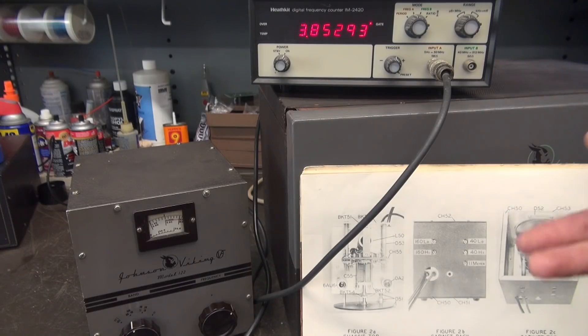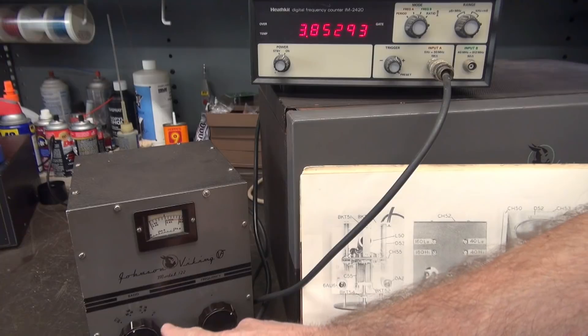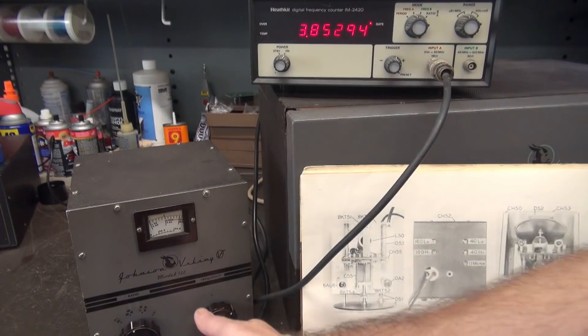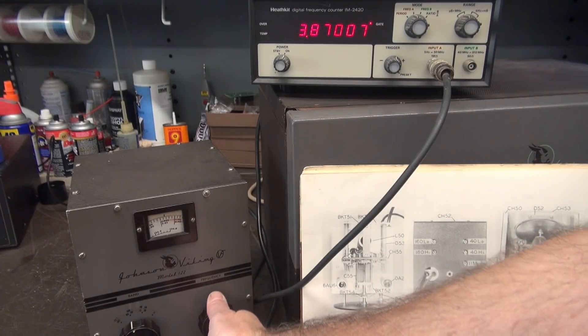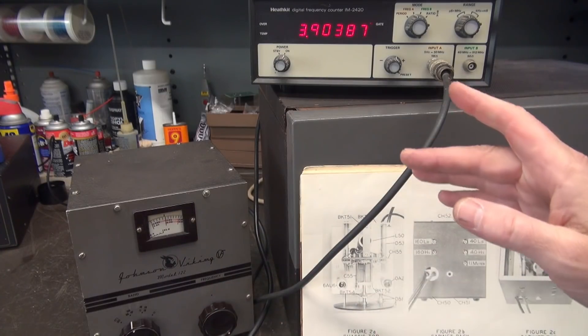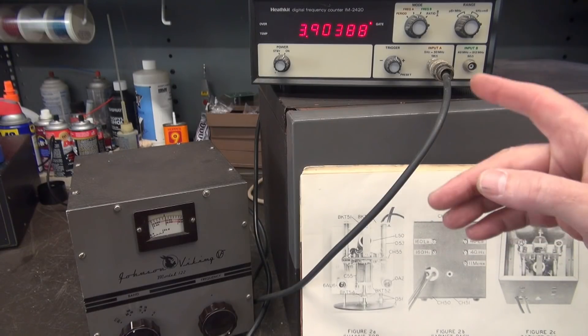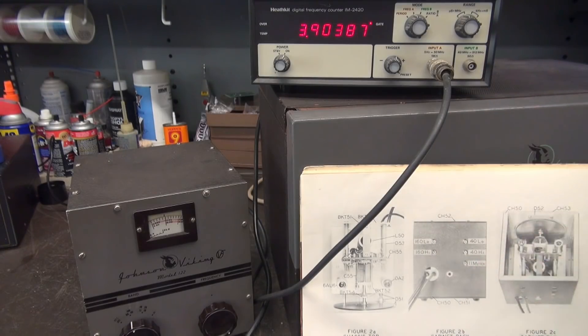So I'm at 3.85 megahertz on 80 meters and look at there. So when I adjust that dial you'll see the frequency counter following it, and this is also a really good way to check stability of your VFO. Now let's go to 40 meters.